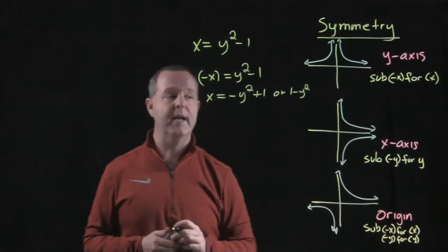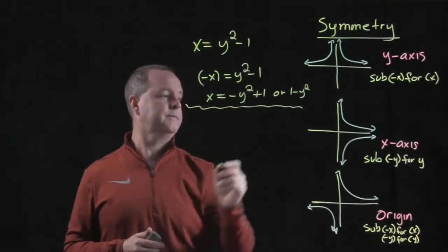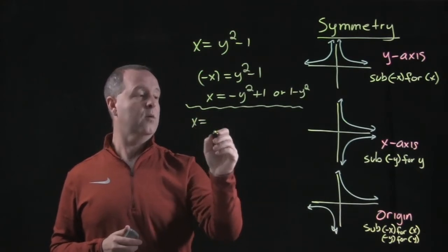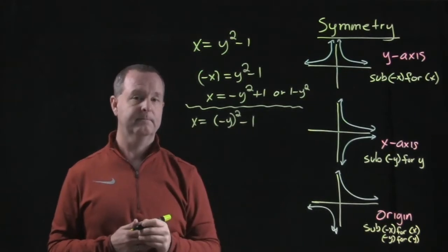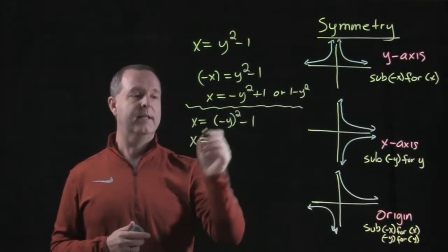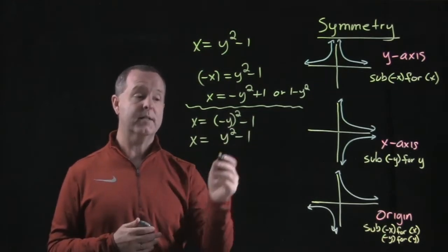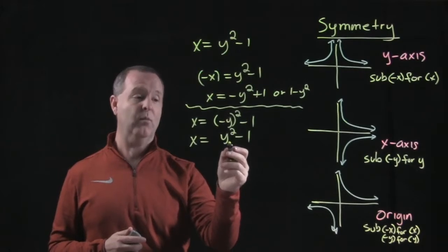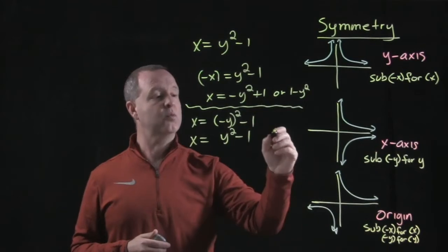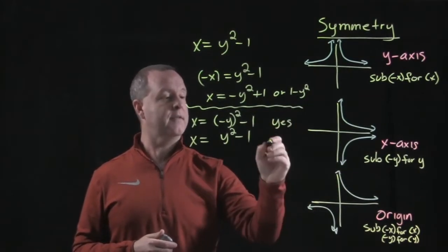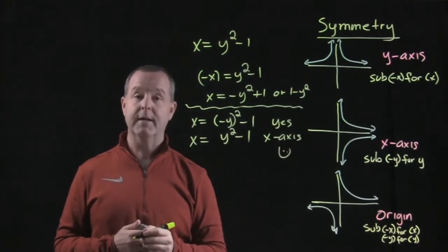Now let's substitute for negative y and check if there's symmetry about the x-axis. We'll take our equation x equals, we'll put in negative y, square that minus 1, reduce that down. Negative y squared is y squared minus 1. Now notice that what I've got, y squared minus 1, matches with what I started with. So yes, this one is symmetrical about the x-axis. So there is symmetry there.